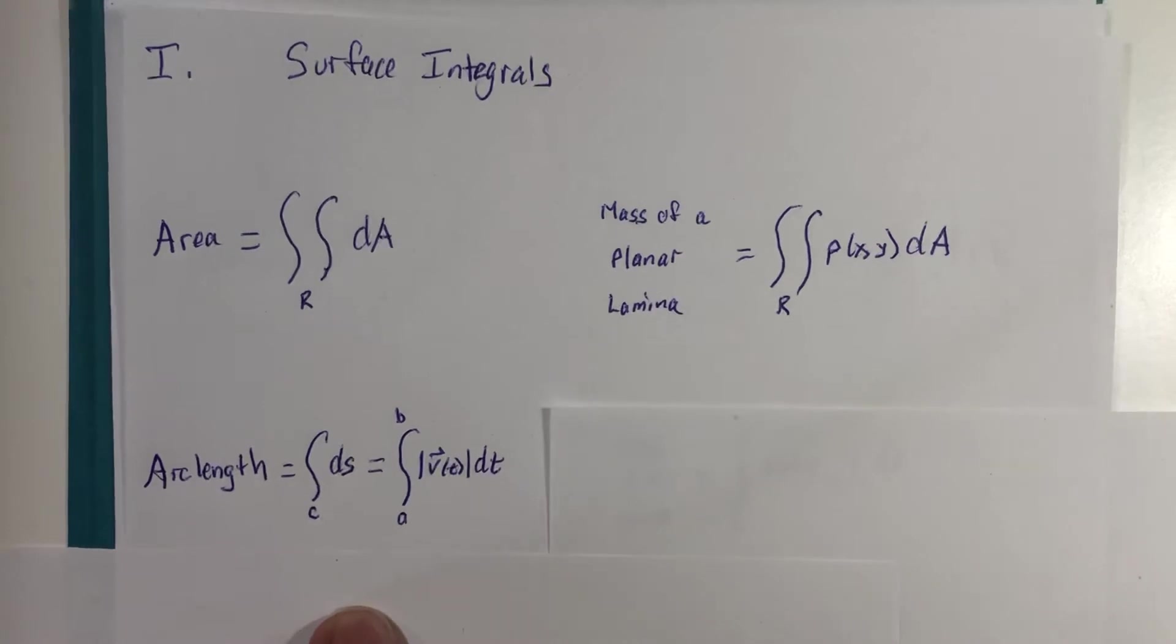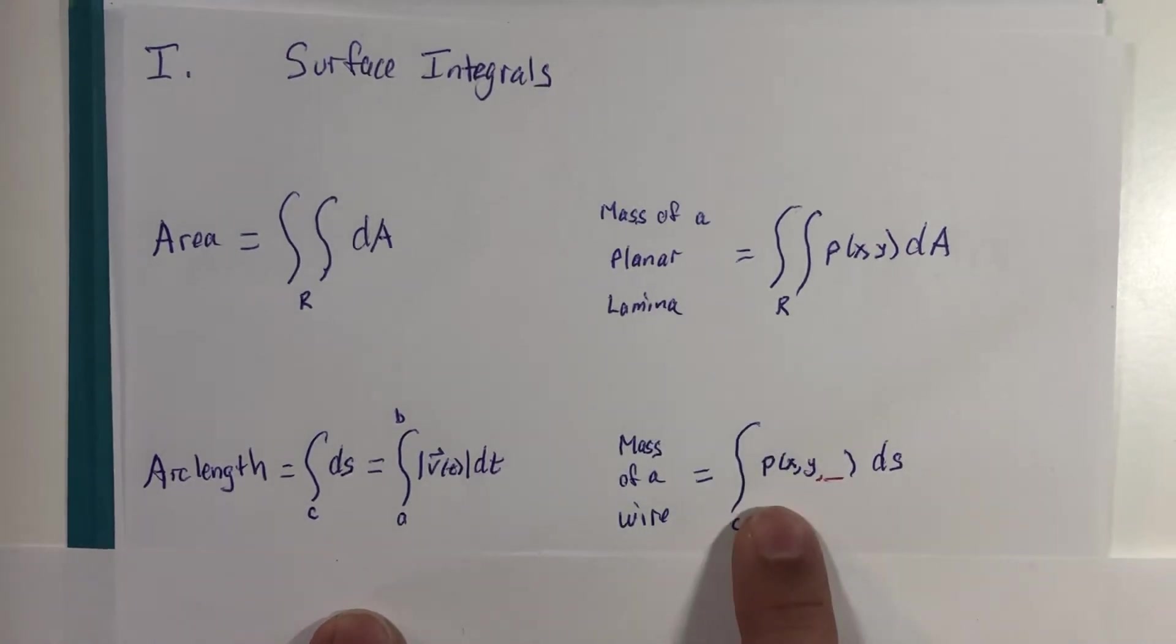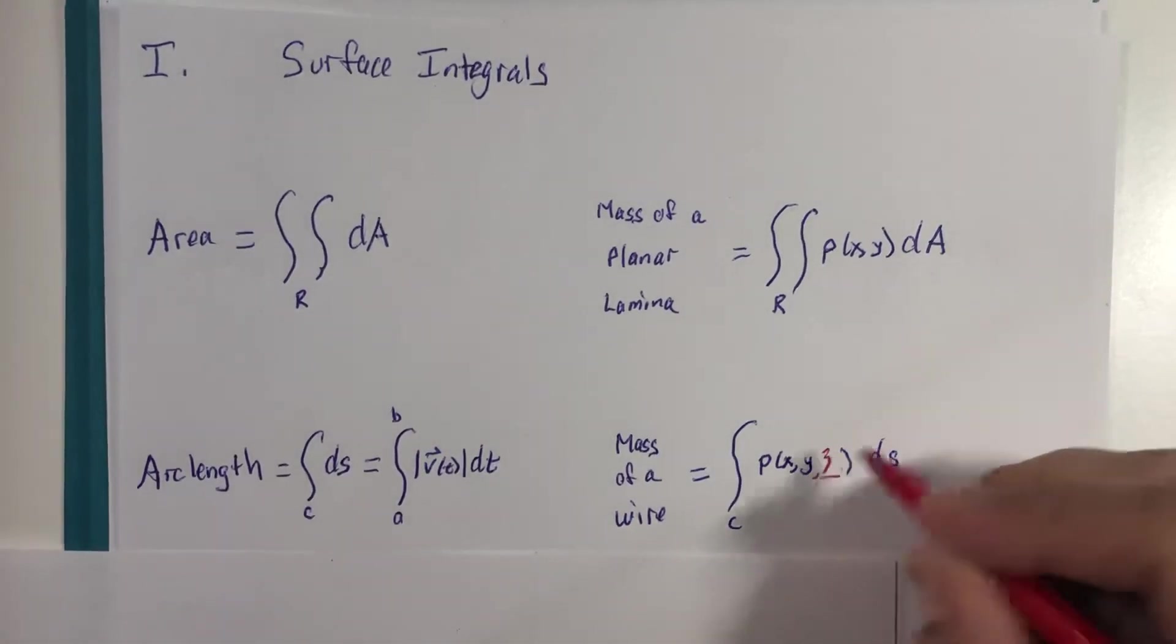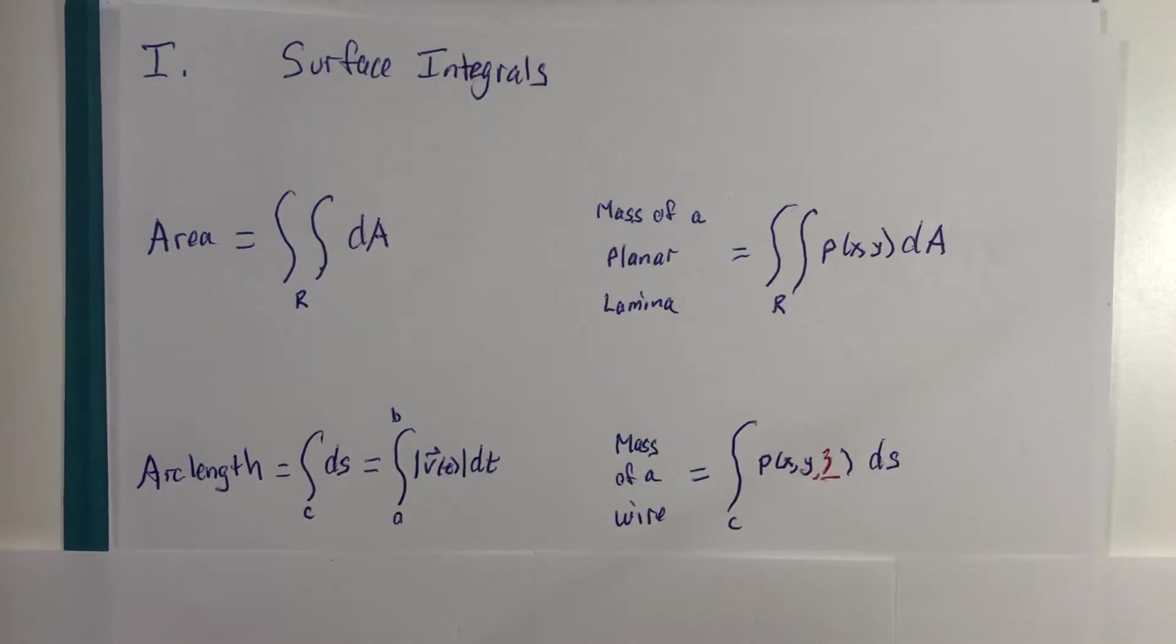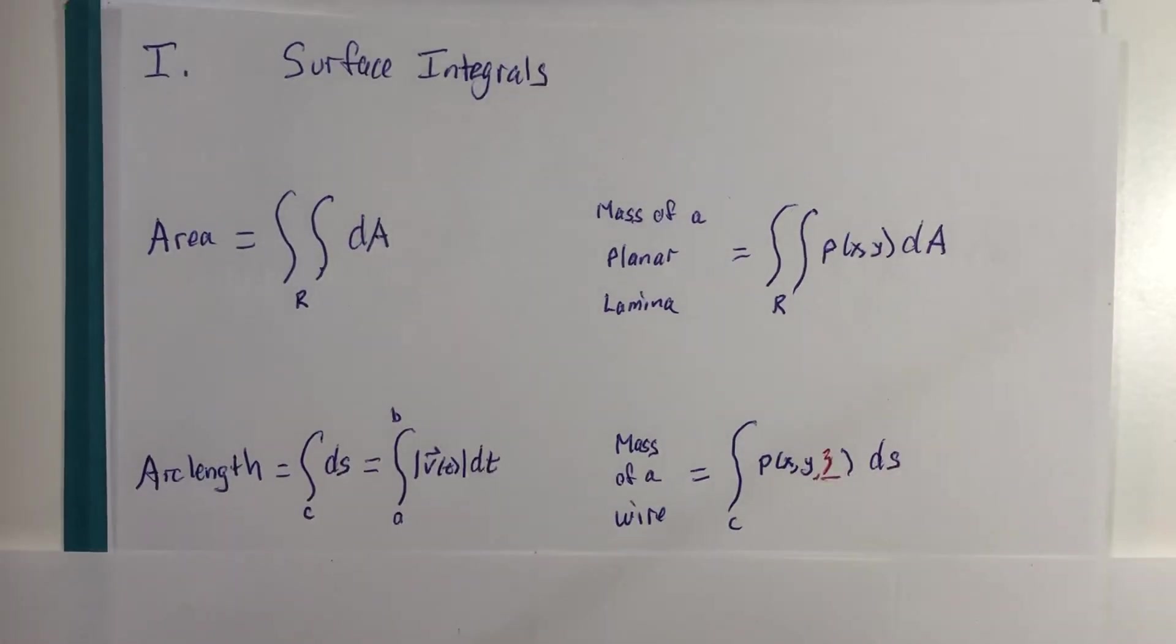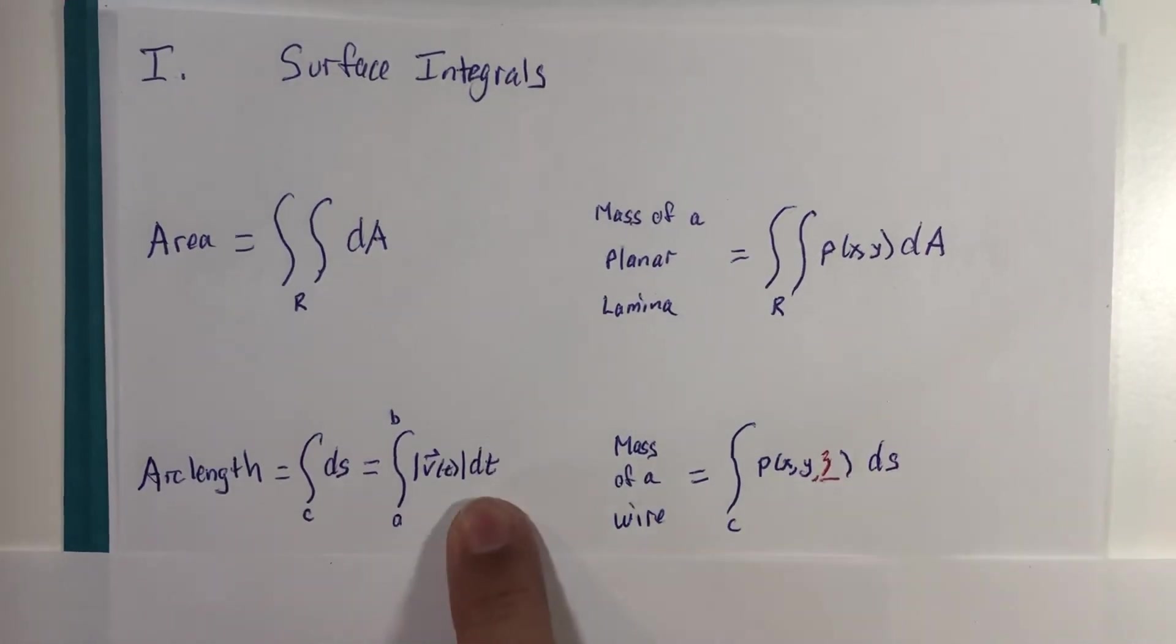And we met our first line integral. And that was when you multiplied a function. And that function could be in two or three variables. So it literally could have a z if the curve was in space, like the path of a fly, for example. We convert everything to t.